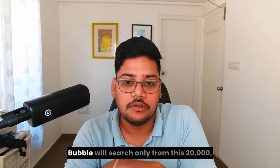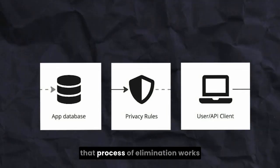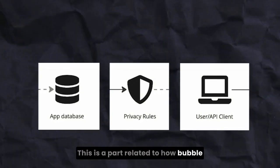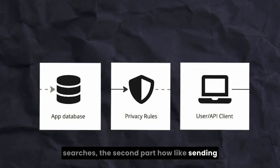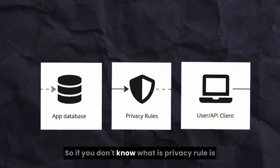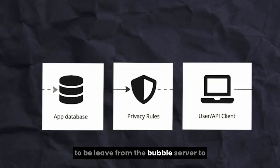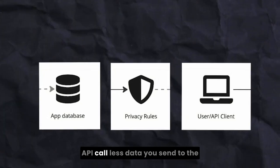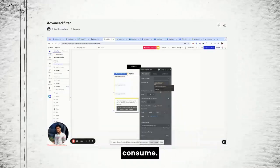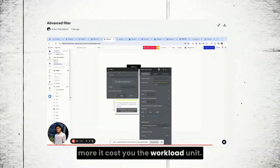The second part — sending search data to the client side — involves privacy rules. Privacy rules basically define what data needs to leave the Bubble server to the client side. The less data you send to the client side, the less workload unit it will consume. So: a bigger database costs more workload units, well-maintained privacy rules cost less, and more detailed database constraints help you save workload units.